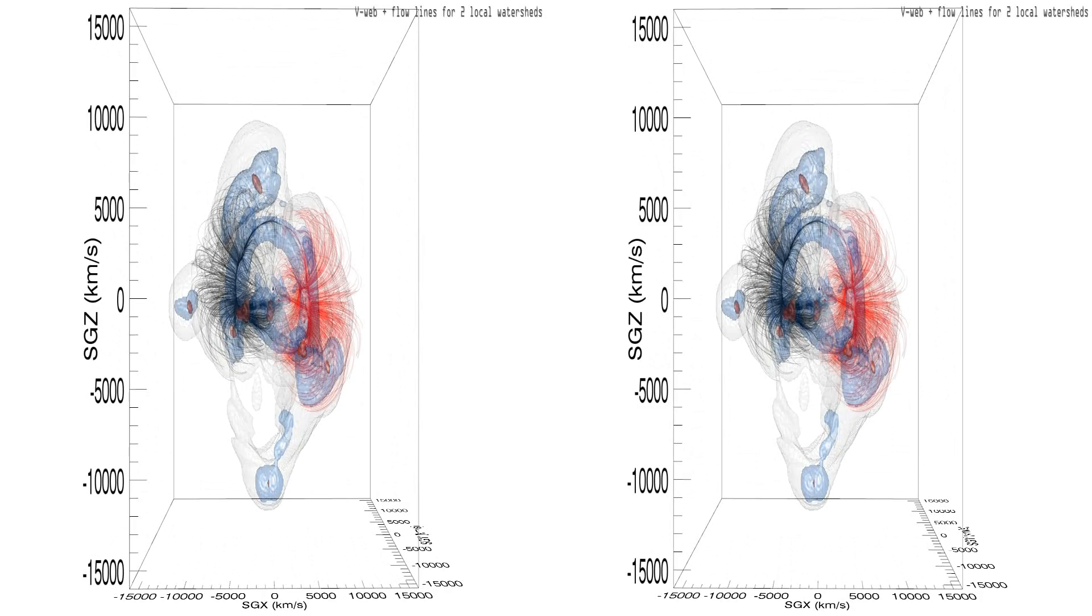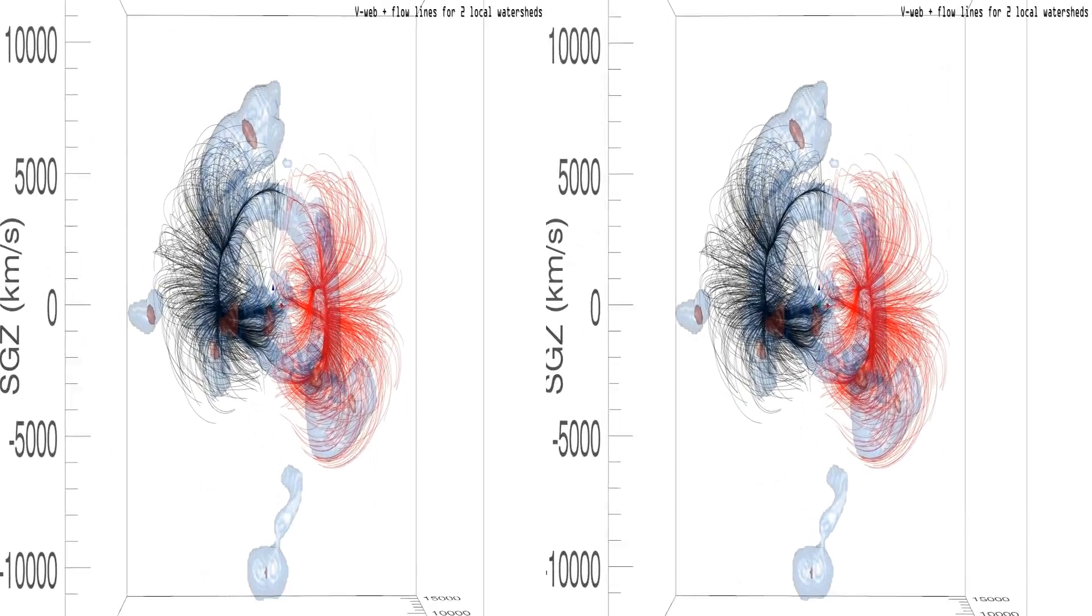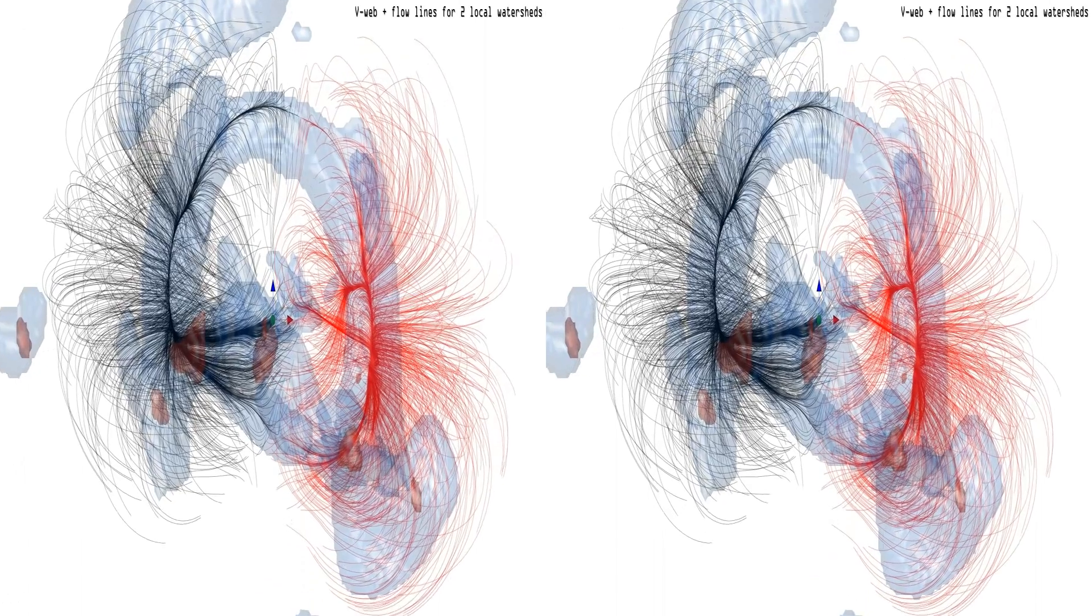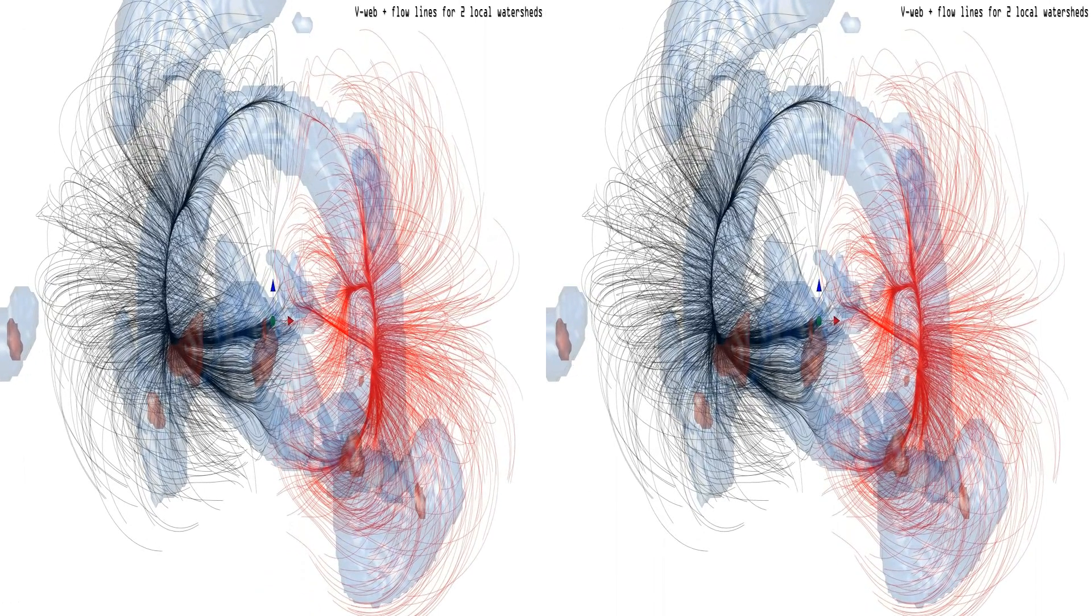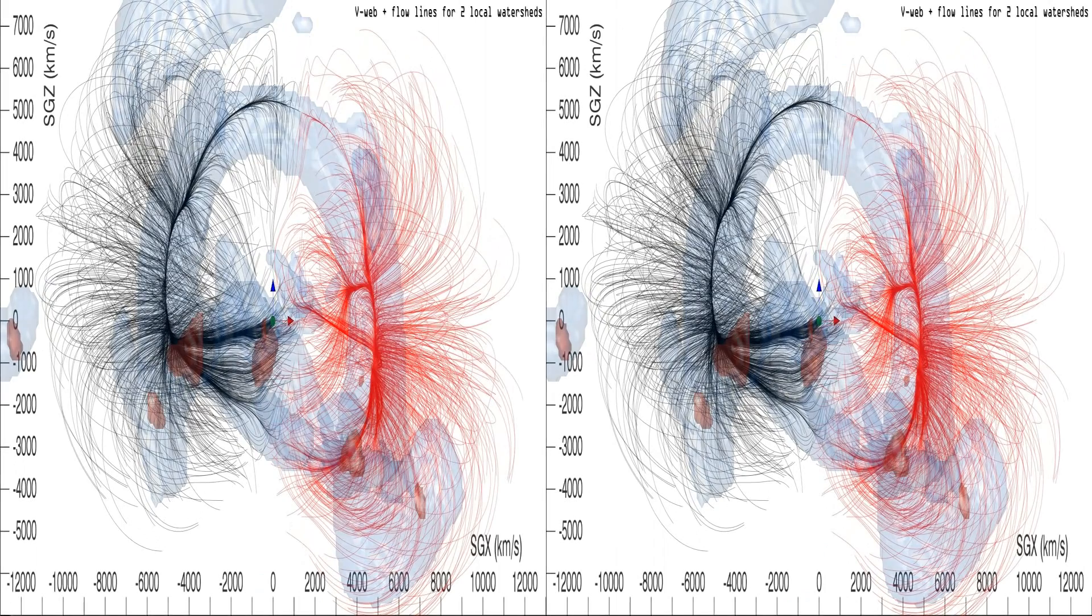We see local velocity flows in two adjacent regions. We live in the region of the black flow lines, but we are near the transition to the red flow lines associated with the Perseus Pisces Basin of Attraction.